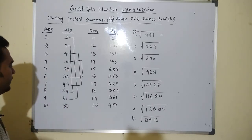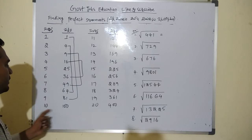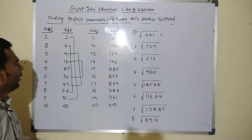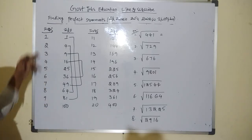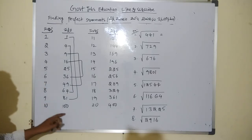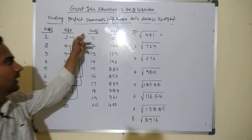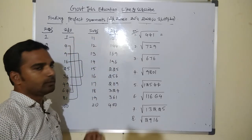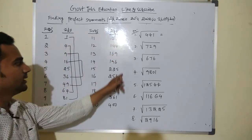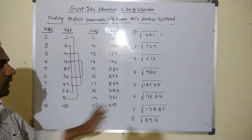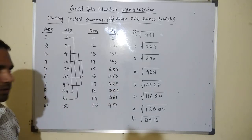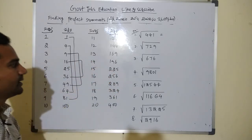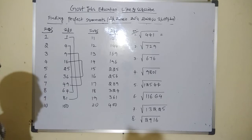So summarizing the unit place values for perfect squares: 0, 1, 4, 9, 6, 5, 6, 9, 4, 1, 0. The unique unit place digits for perfect squares are 0, 1, 4, 5, 6, and 9.